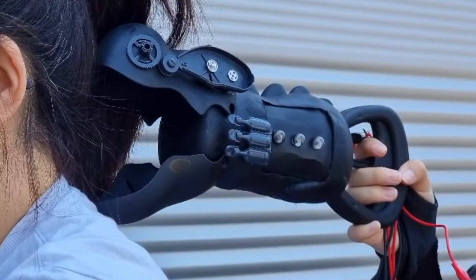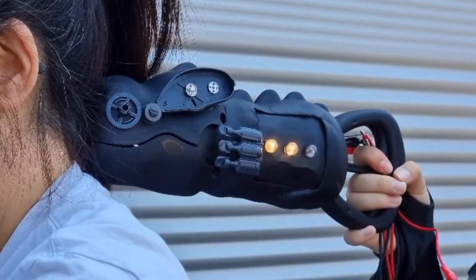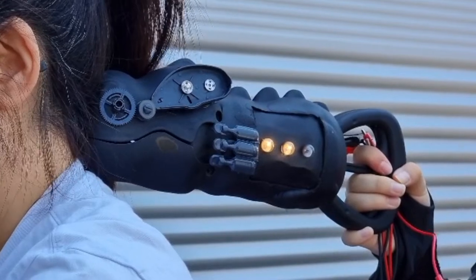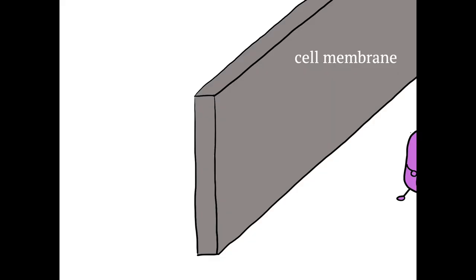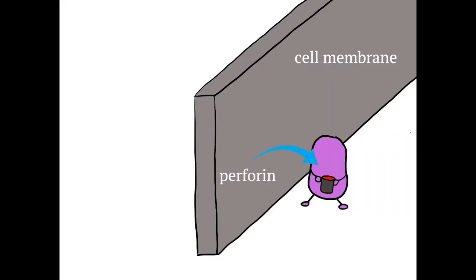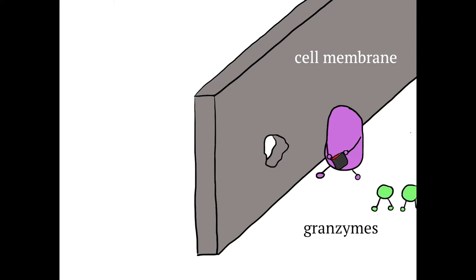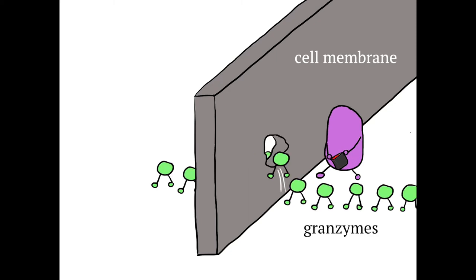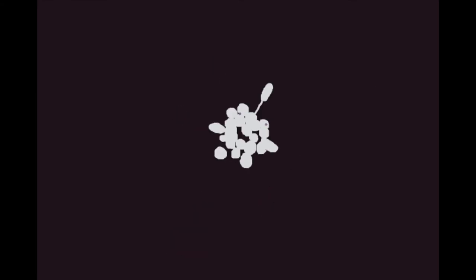Once the binder binds to CD19, the transmembrane and endodomain will signal the activation of CAR. Once activated, your CAR will release perforin, making a pore on the cancer cell surface for you to inject granzymes, inducing the cancer cell to go through apoptosis.